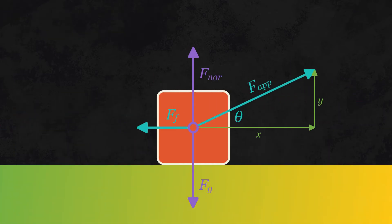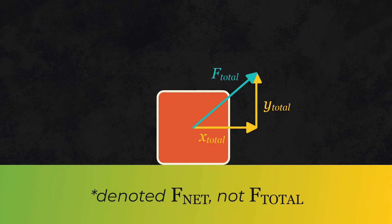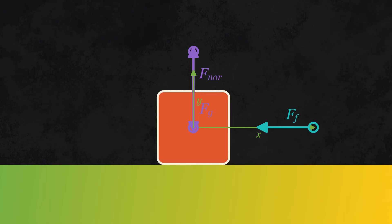Now all of these forces are all well and good, but the purpose of a free body diagram is to find the total force on an object, also called the net force. To do this, you need to add up all of the vectors of the forces acting on the object.